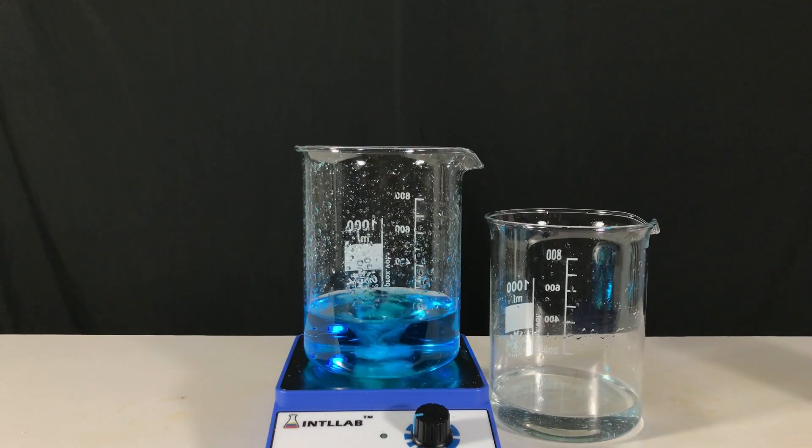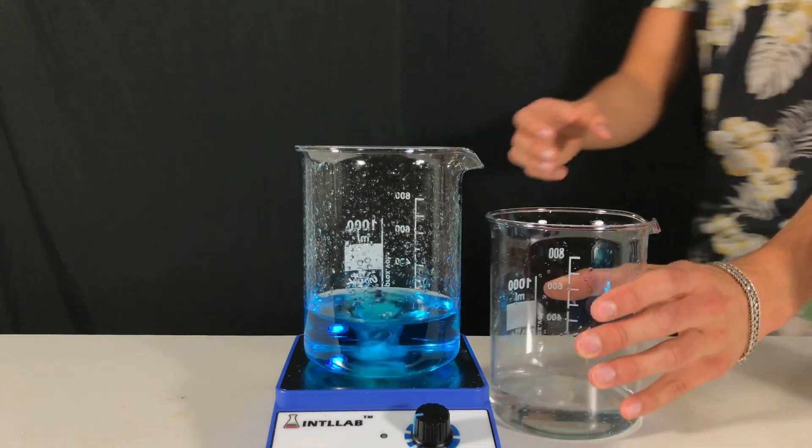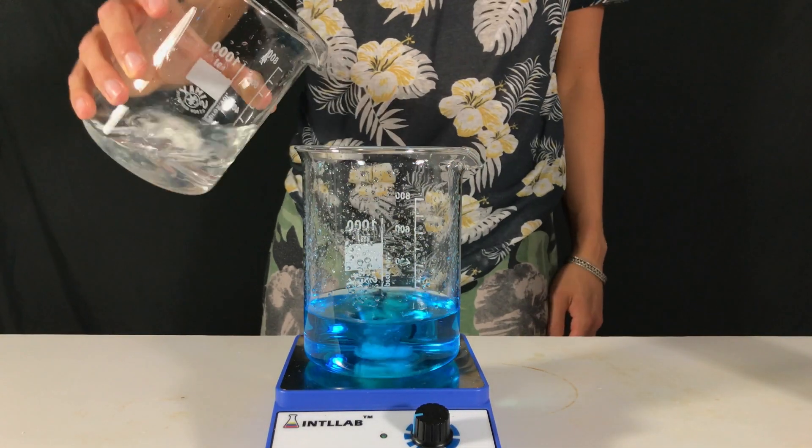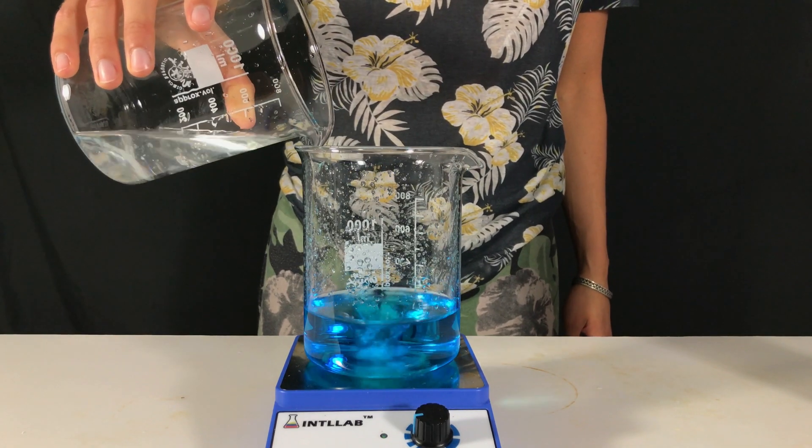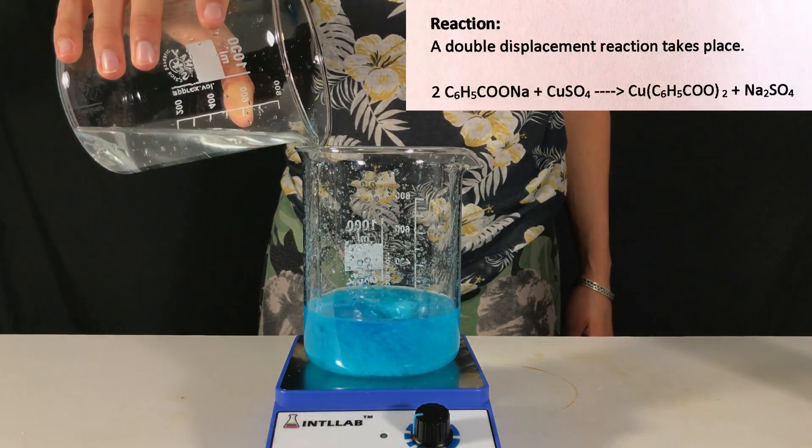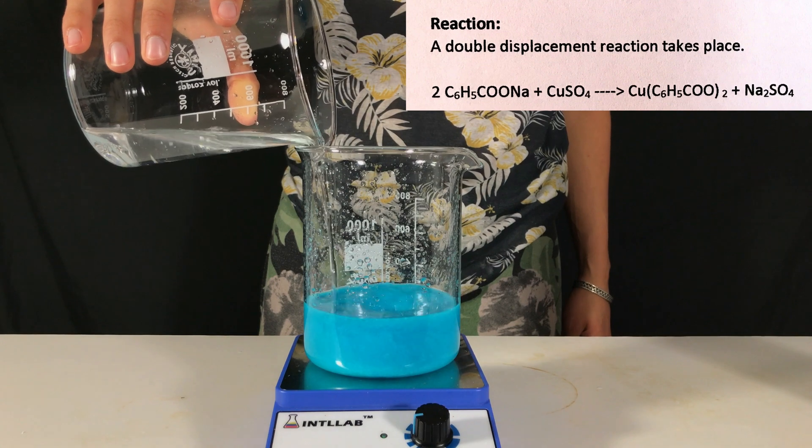When both of the chemicals have completely dissolved we take the beaker with the sodium benzoate solution and slowly add it to the copper sulfate. A double displacement reaction is taking place.